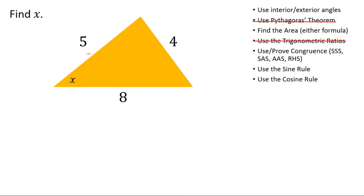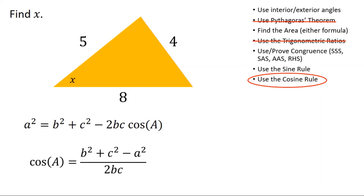What do I have instead? I have three sides and an angle, which is precisely the setup we needed for the cosine rule. We have two versions: a² = b² + c² − 2bc cos A, or cos A = (b² + c² − a²) / 2bc. Those are two equivalent versions of the same rule, but we need to method-select which one is better in this situation. Clearly I'm finding an angle, so the second version is probably going to be more useful — I'm going to use that one.